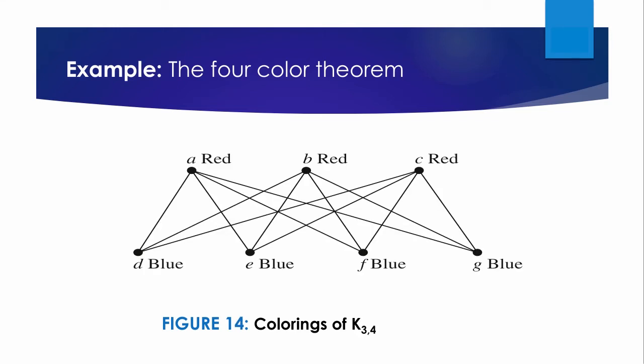What is the chromatic number of the complete bipartite graph K(m,n) where m and n are positive integers? The number of colors needed may seem to depend on m and n. However, only two colors are needed because K(m,n) is a bipartite graph. So χ(K(m,n)) = 2. We can color the set of m vertices with one color and the set of n vertices with a second color. Because edges connect only a vertex from the m-set to a vertex from the n-set, no two adjacent vertices share the same color. A coloring of K(3,4) with two colors is displayed in Figure 14.